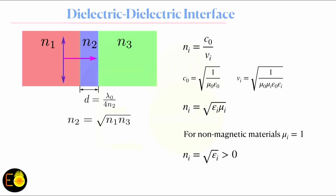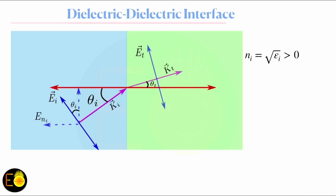Since permittivity is greater than 0, N1 is greater than 0. You can confirm this because the velocity of light in free space is always greater than the velocity of the electromagnetic wave in a medium, so this ratio is always greater than zero. For each dielectric, the refractive index is greater than 0.